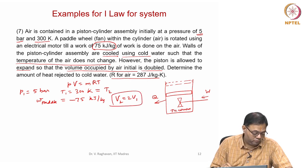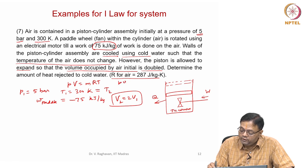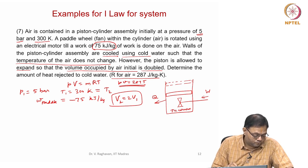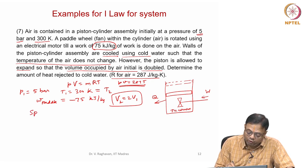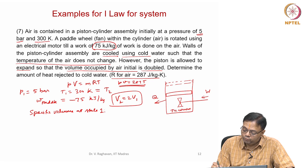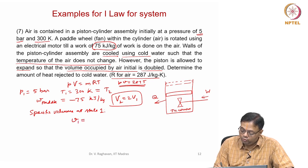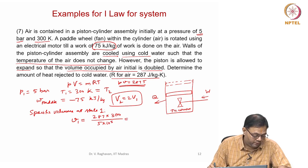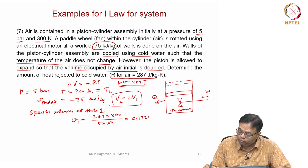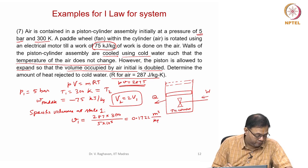It is also known that v2 = 2v1. These are the given data, and we know pV = 287T. First, I will find specific volume at state 1: v1 = 287 × 300 ÷ (5 × 10⁵) = 0.1722 m³/kg.